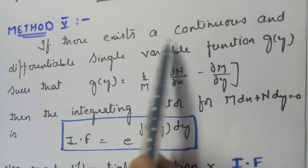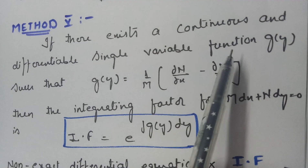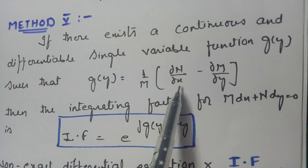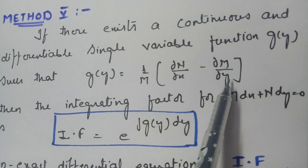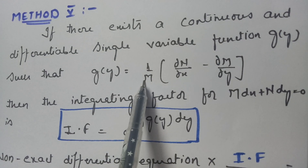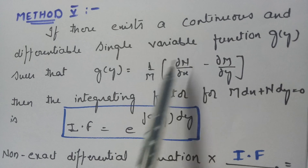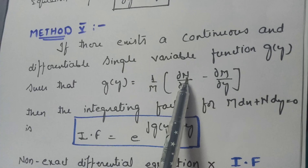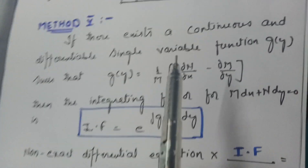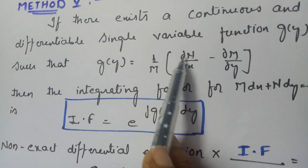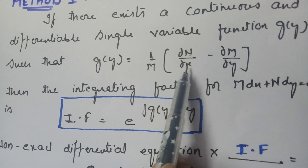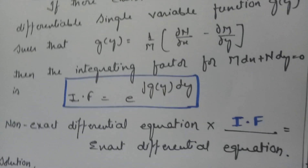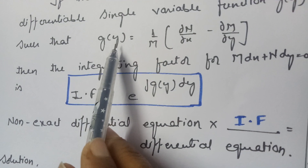In Method 5, if there exists a continuous and differentiable single-variable function G(y) such that G(y) = (1/M)(dN/dx − dM/dy), and this expression is a function of y only (not x), then we can proceed. The key difference from Method 4 is that here we use 1/M instead of 1/N.